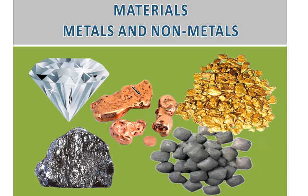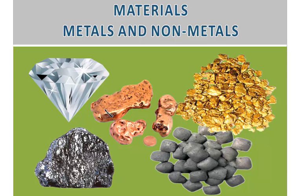This is a picture of copper. Copper is obtained from these copper nuggets — it is a metal. This is gold, a metal. Iron is obtained from iron ores. Aluminium is obtained from bauxite. Diamond is a form of carbon, so diamond is not categorized as a metal — it is a non-metal. There are certain properties of metals and non-metals which we will be discussing in this chapter on materials, metals and non-metals.